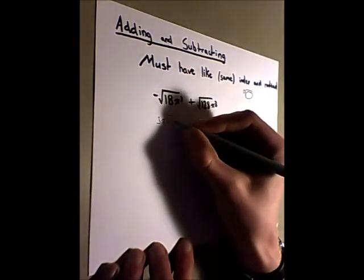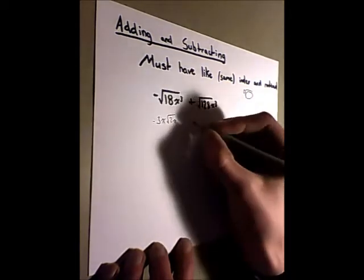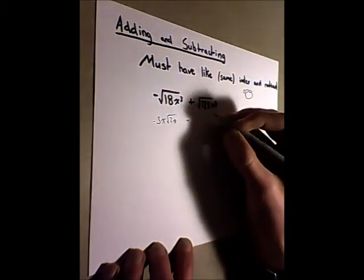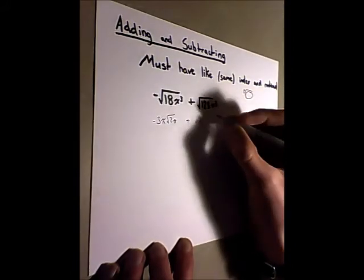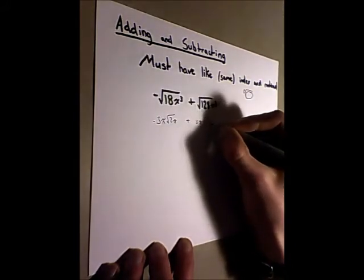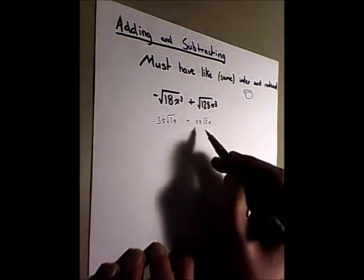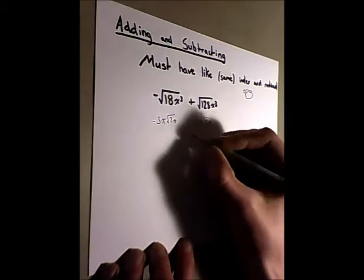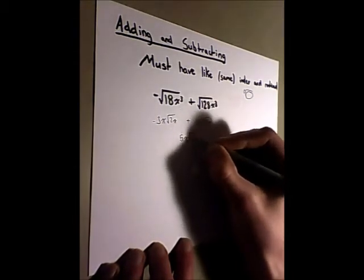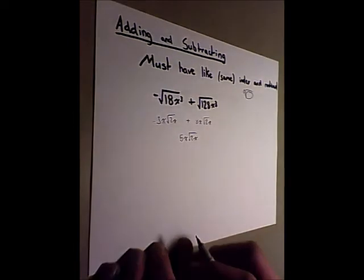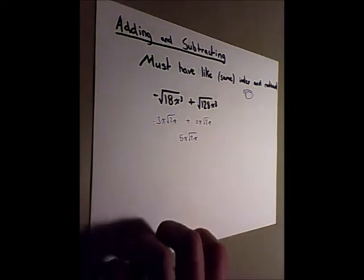3x root 2x plus 8x root 2x. And then so we subtract 3x from 8x and we have 5x root 2x. And that is as simple as that. It's not hard whatsoever.